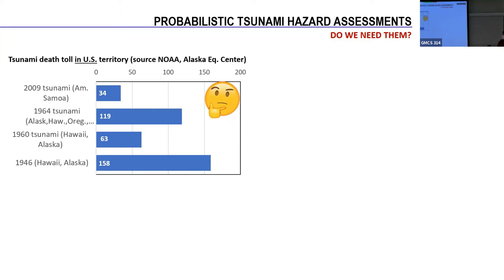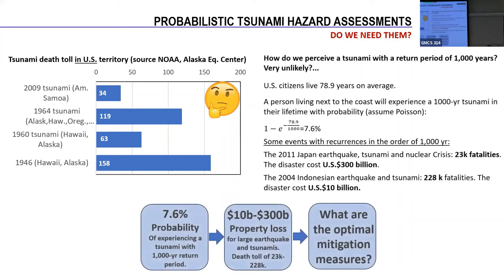Maybe we are only observing the last 100 years — here you can see only tsunamis since 1946 in the Hawaii and Alaska affected area. We have to consider processes or tsunamis which are happening with a recurrence of 1000 years. This is why we have to take care about events happening with very low recurrence — for example, 1000 years or 2000 years — as a mean recurrence.